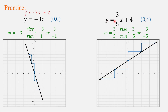Finally, for y equals 3/5 x plus 4, the y-intercept is 4, so (0, 4). The slope is 3/5 — go up 3 and to the right 5, or move down 3 and to the left 5. With a positive slope, the line goes up from left to right. Continue practicing graphing equations in slope-intercept form, and I'll see you in the next video.